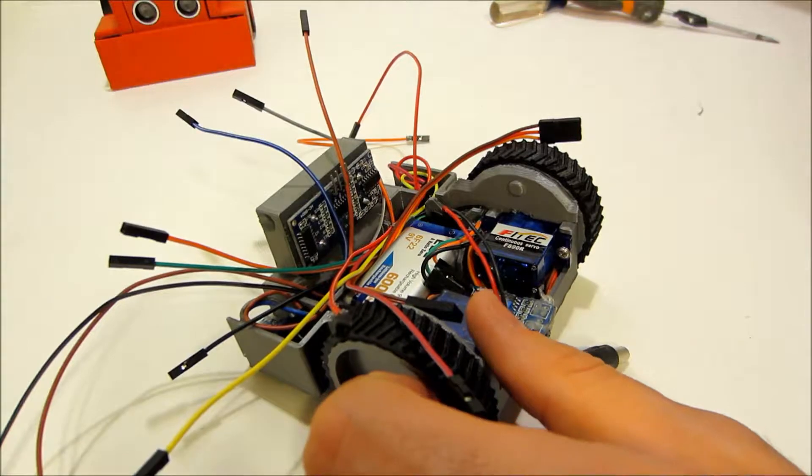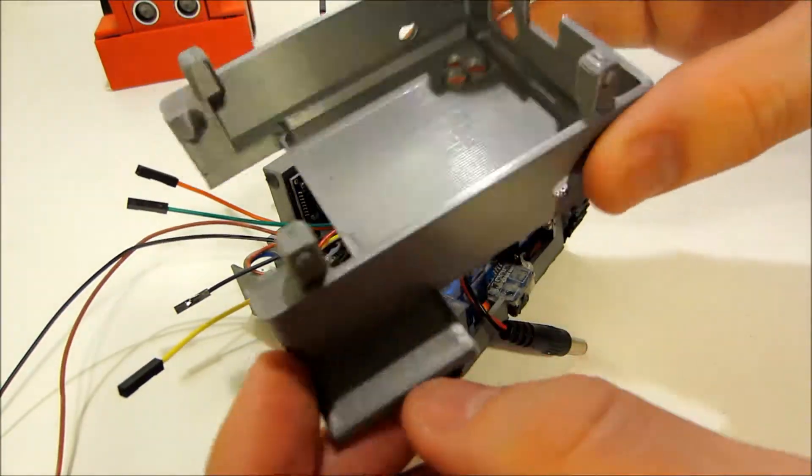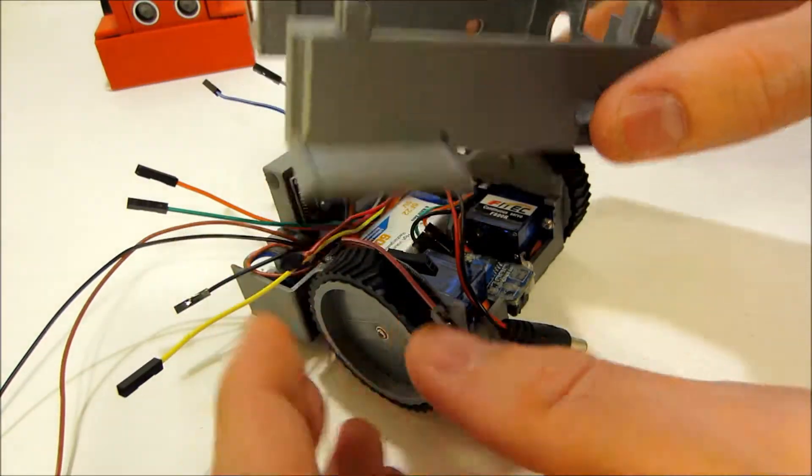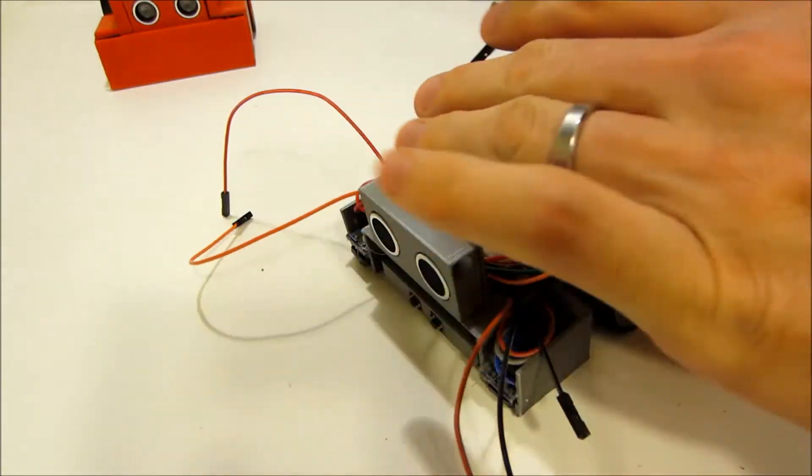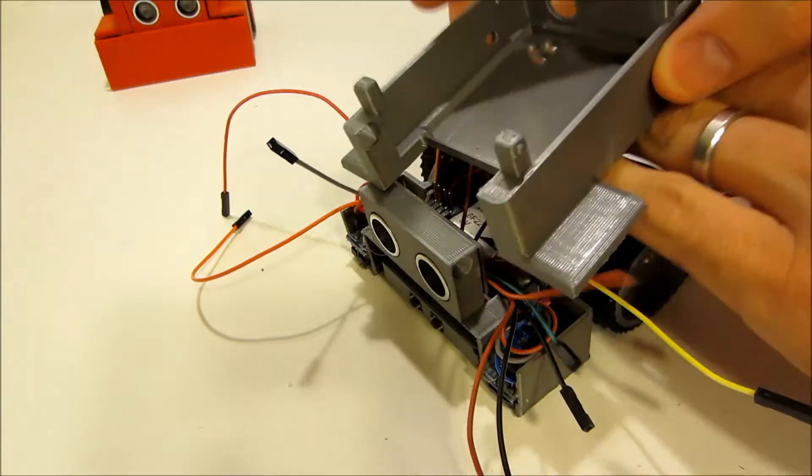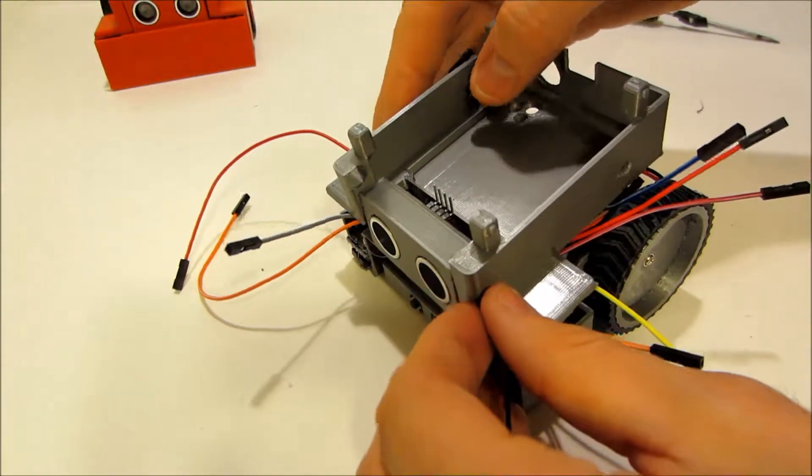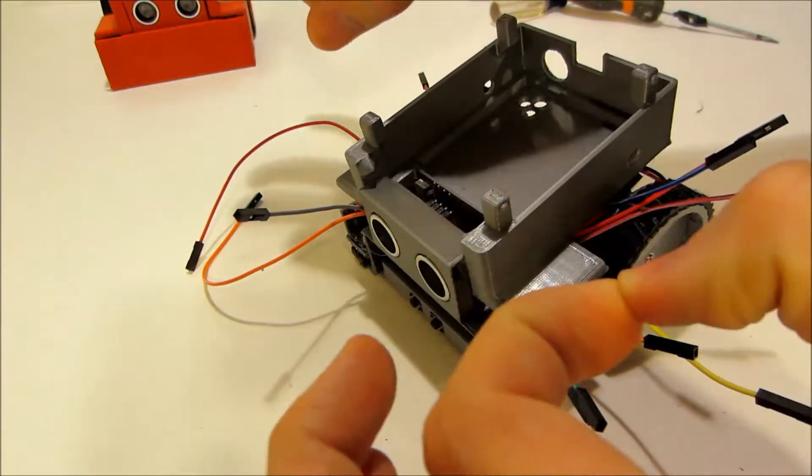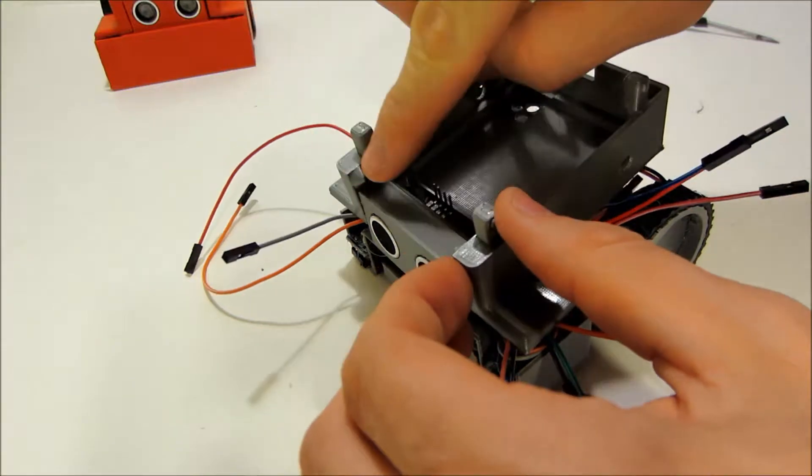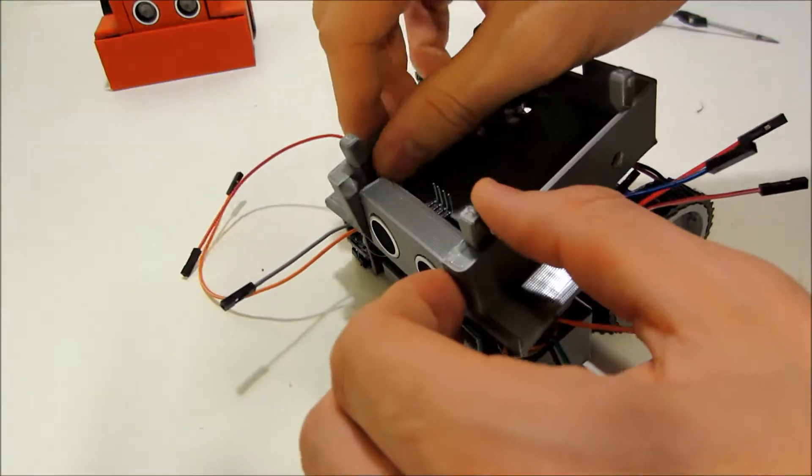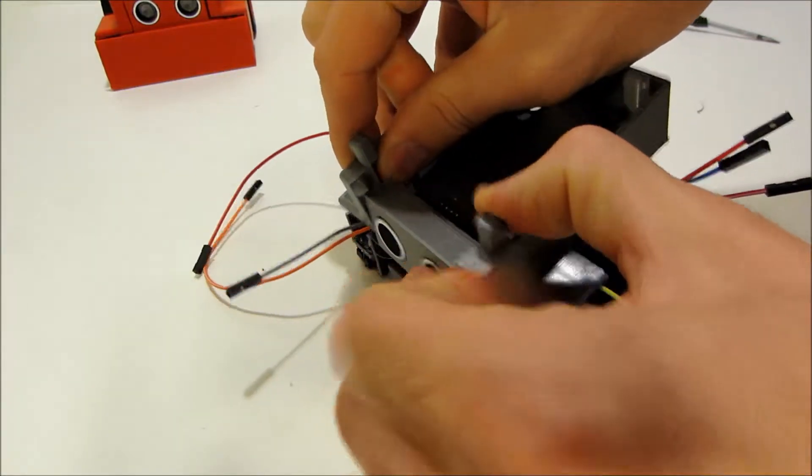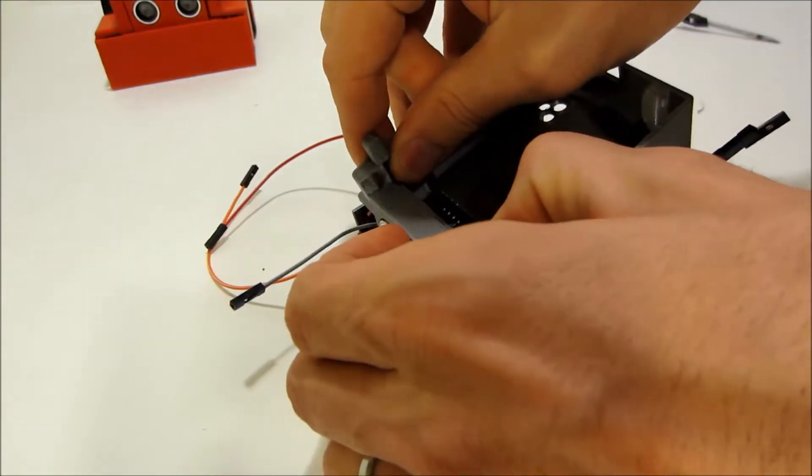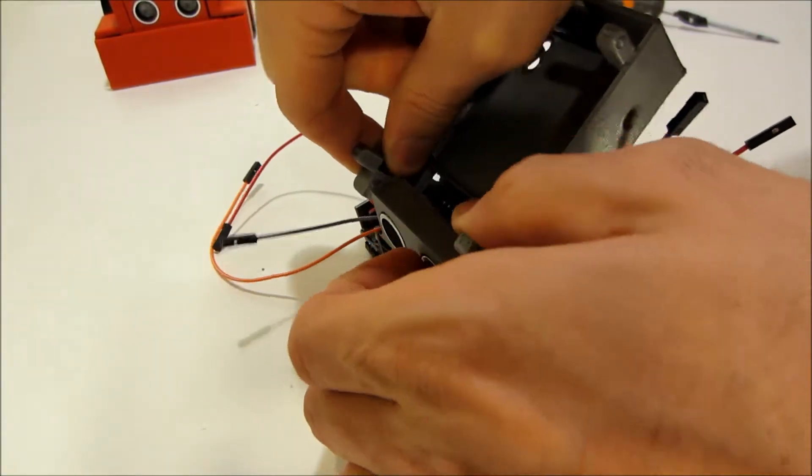What we'll do next is grab the Arduino mount, and we're going to grab each face and pull outward just enough to help these two hinge points install. There it is.